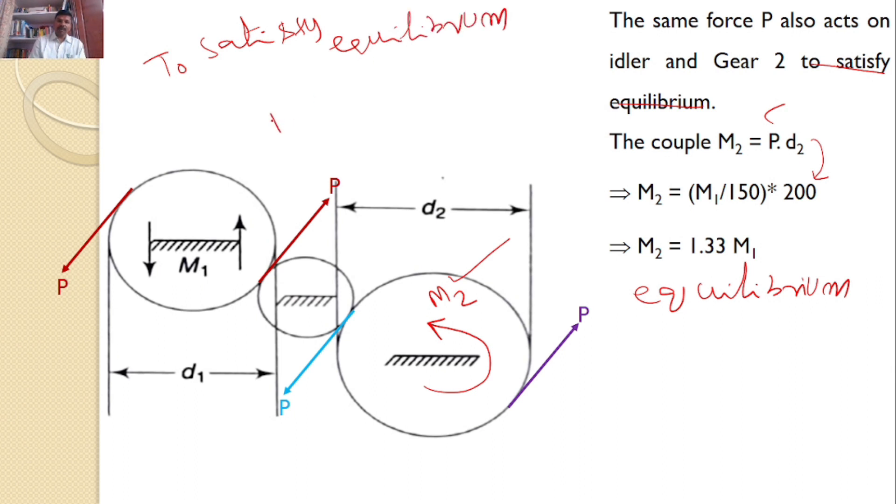we need to apply a moment M₂' in the opposite direction. M₂' = -1.33M₁ to maintain equilibrium. The negative sign indicates M₂' is opposite to M₂.